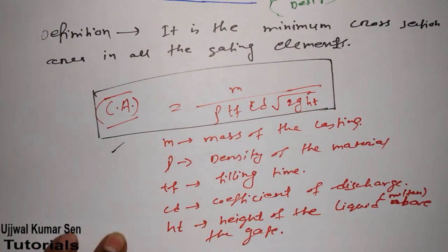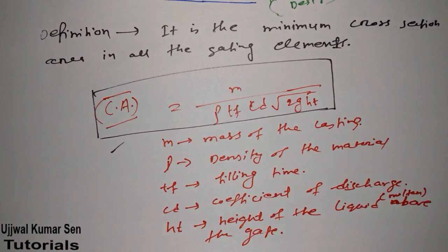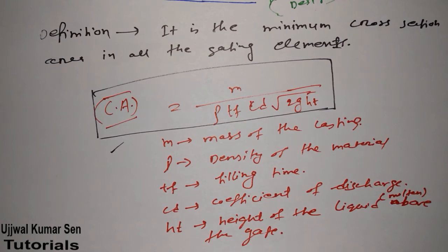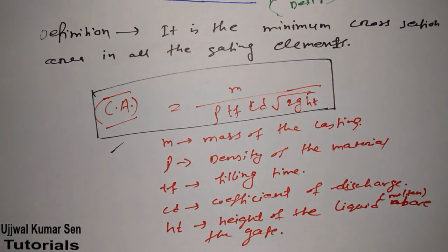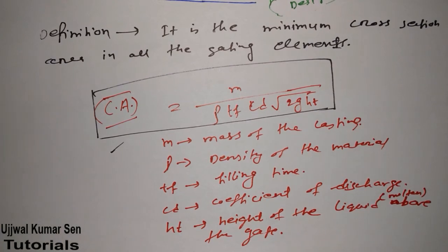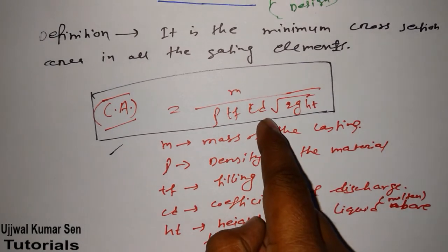I hope you got the formula and have no confusion. In a competition or examination, they may ask you to find the choke area. Now, an important thing I want to share is: where exactly does the choke area occur in a pressurized gating system versus a non-pressurized gating system? Once you visualize that, it becomes quite easier to understand.